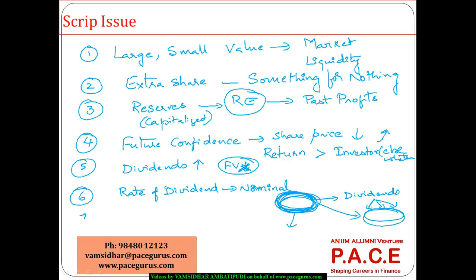In some cases, there are regulatory-related requirements, especially in Companies Act, that the company should typically have a minimum issued share capital of some amount in case it has to act as a trustee. This mechanism — the script issue — transfers the amount from the reserves account to the share capital account, resulting in an increase of the share capital, which could meet these kinds of requirements. So the majority of the benefits we are seeing here are psychological in nature, some perceived by the company and management, some by the investor community.